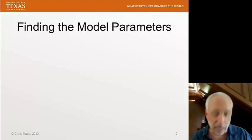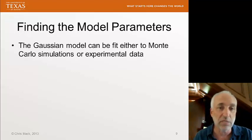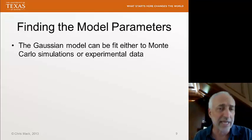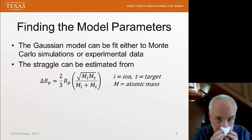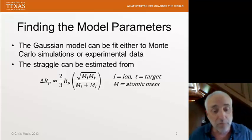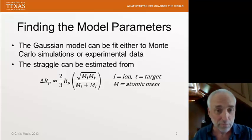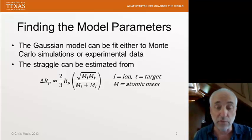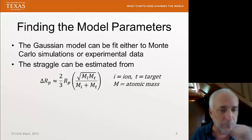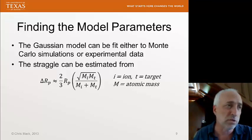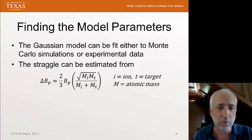How do we find these model parameters? The Gaussian model can be fit to Monte Carlo simulations or to experimental data. The straggle can also be estimated from the projected range — they are not independent, and their relationship is a function of the mass of the ion and of the target. Typically we get straggles that are about a quarter to a third of the projected range for typical dopant ions.